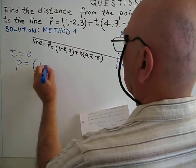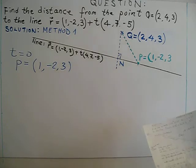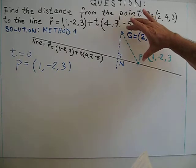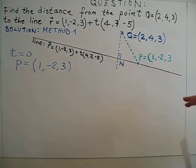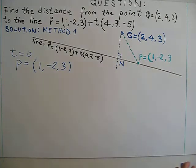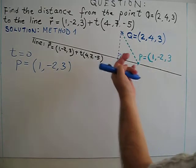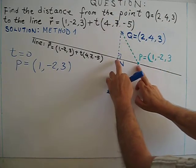For t equals zero I get P equals (1, -2, 3). So I mark the point here. So we get a vector PQ. I want to get scalar projection of PQ onto this line. If I get scalar projection of this PQ onto this line, I get the distance of PN.